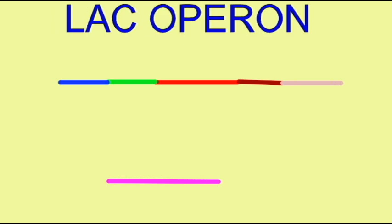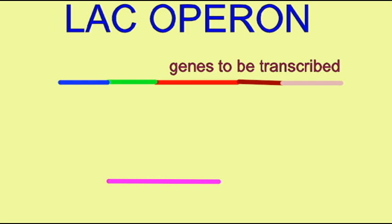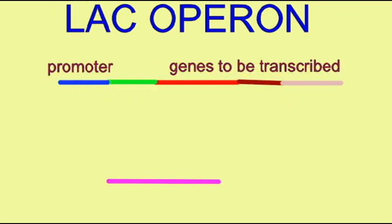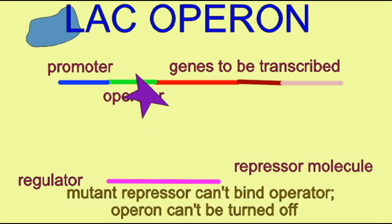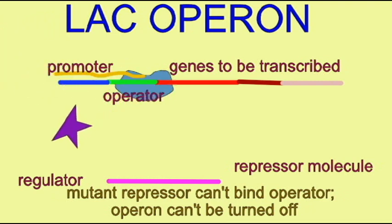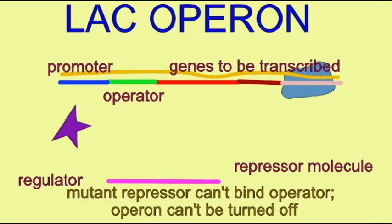There are a number of mutations which can affect the activity of the lac operon. For example, if the regulator gene is mutant, and therefore the repressor molecule is mutant, it may not be able to bind the operator region. If the mutant repressor can't bind the operator region, the operon can't be turned off and will always be turned on. So this is inefficient — the genes would be transcribed to metabolize lactose, even when lactose isn't present.